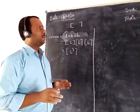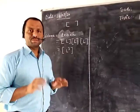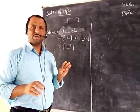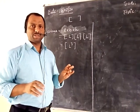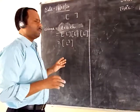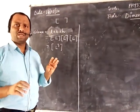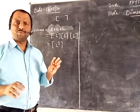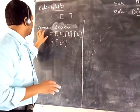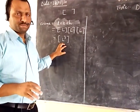Dimensions means these are written in terms of the 7 fundamental quantities — length, mass, time, temperature, electric current, luminous intensity, and quantity of matter. Mostly in class 11 we will be using only 3: M, L, and T — M for mass, L for length, and T for time. This is how the dimension of volume is expressed.